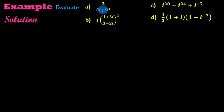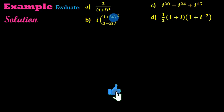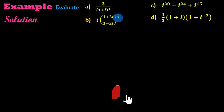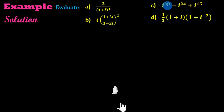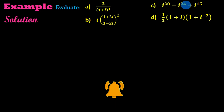2 over 1 plus i to the power of 4. And 1 plus 3i over 1 minus 2i, the whole square. Now see, is the power of 20 minus is the power of 24 plus is the power of 15.